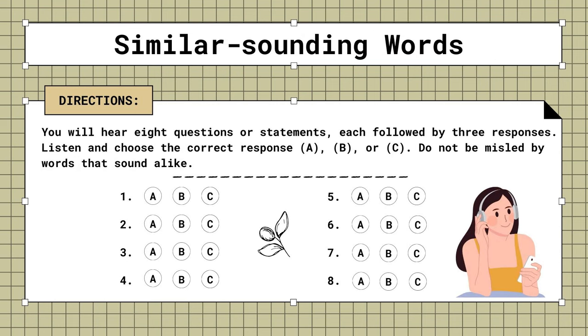Mini-test. Similar-sounding words. You will hear eight questions or statements, each followed by three responses. Listen and choose the correct response. A, B, or C. Do not be misled by words that sound alike.